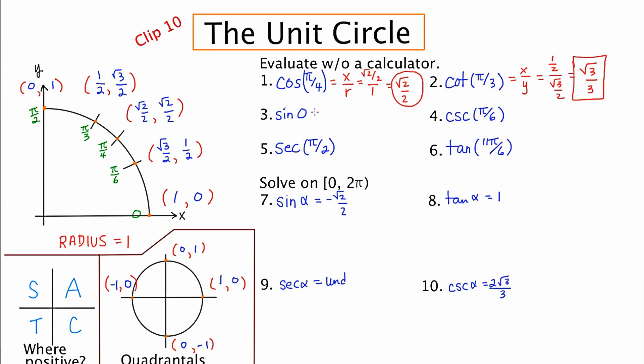Moving to number three, zero radians. Sine is Y over R. R again is always one. That's a no brainer because it's the unit circle. So if I look over here, the R value is one. The Y value is zero. So we have zero over one, which is zero.